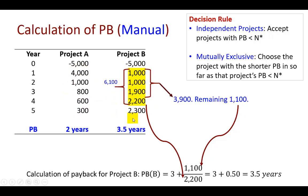To determine the payback period for A, it's pretty straightforward because the project costs $5,000, and in the first two years you can already see we're picking up the full $5,000. So the payback period for A is going to be two years.